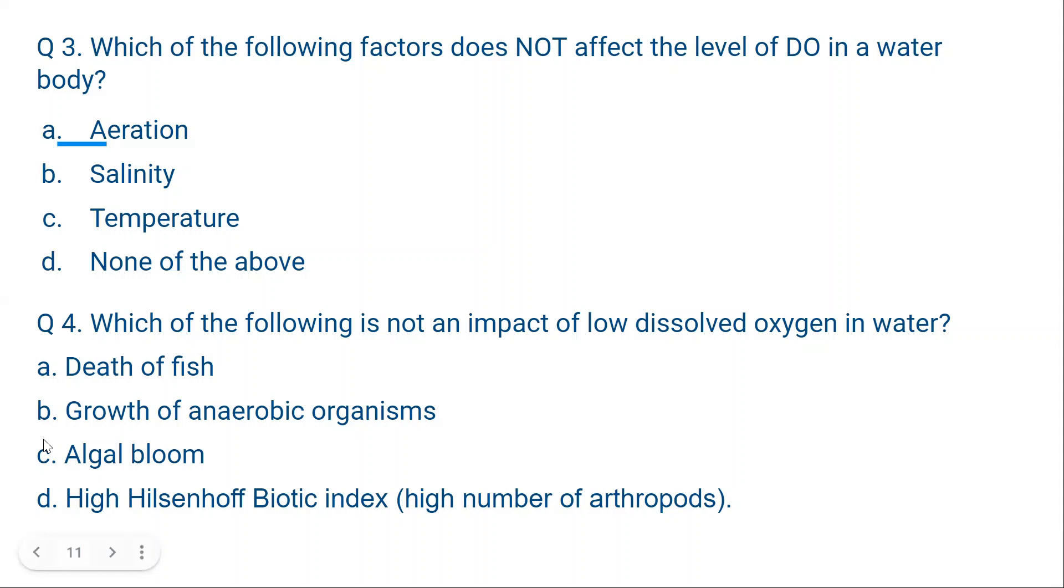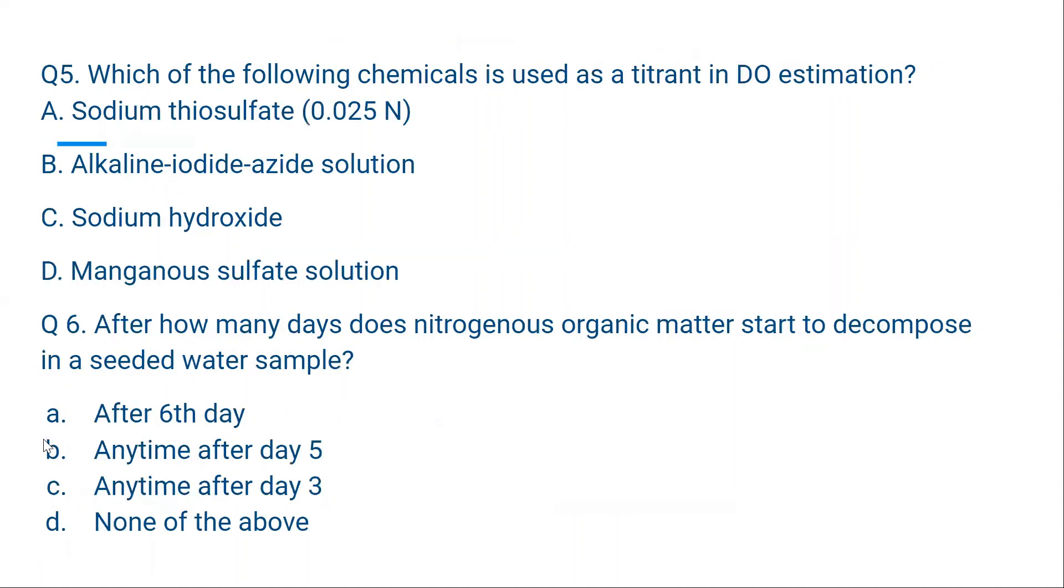Question number 5. Which of the following chemicals is used as a titrant in DO estimation? Sodium thiosulfate, alkaline azide, alkaline iodide azide solution, sodium hydroxide or manganese sulfate solution. All these chemicals are used in DO estimation. But the titrant is sodium thiosulfate. Option A is the correct answer.